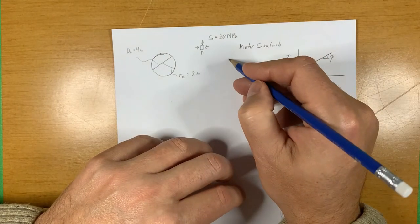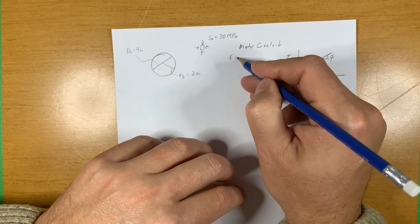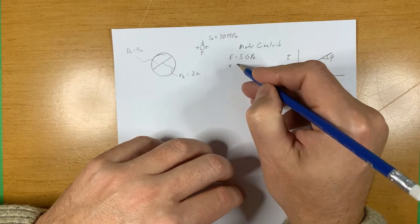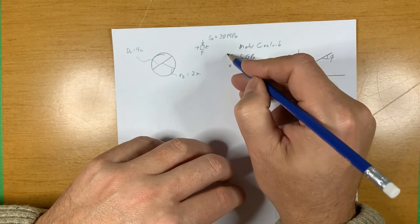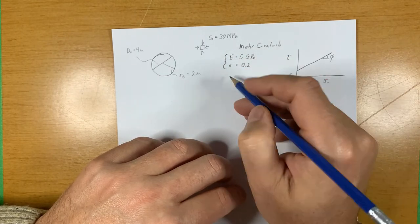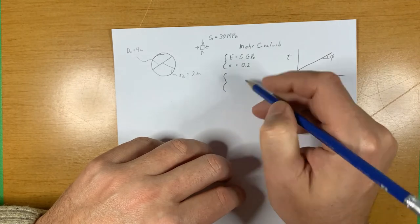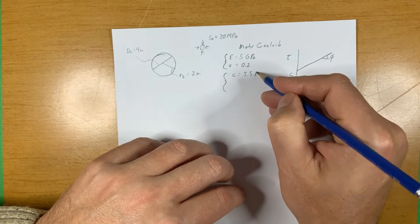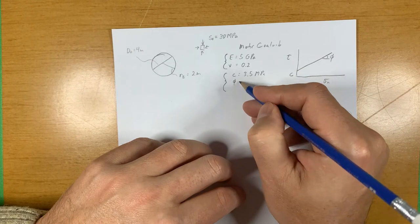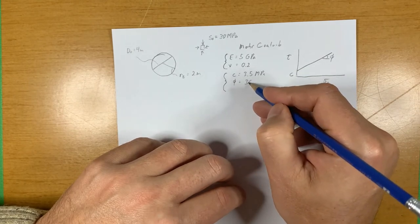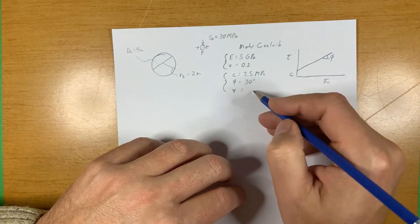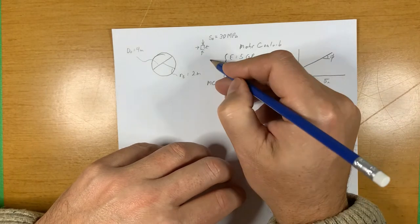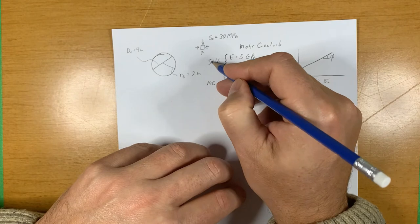We have the parameters. First off, we have stiffness parameters of five GPa and we have a Poisson's ratio of 0.2. Those are our stiffness parameters. And the Mohr-Coulomb parameters of C is 3.5, phi is 30 degrees, and psi, the dilation angle, is 15 degrees.